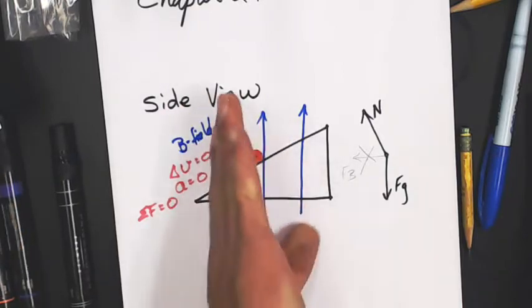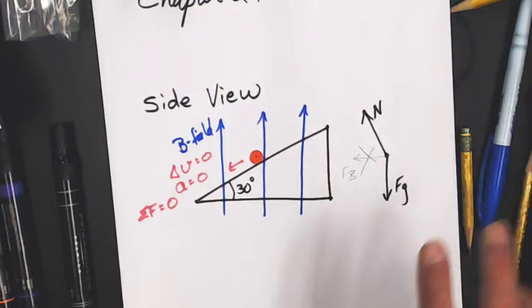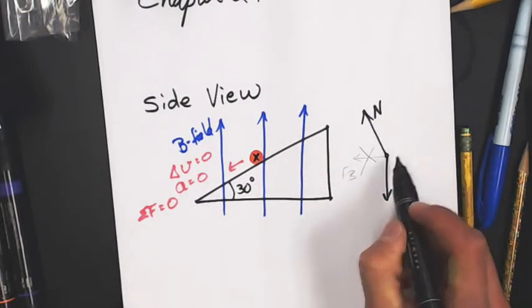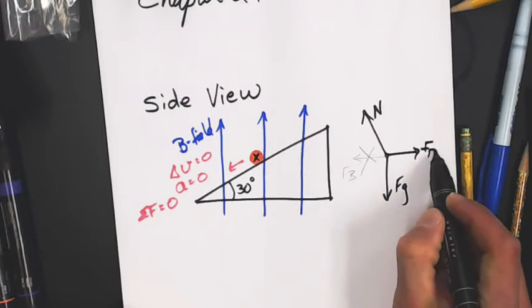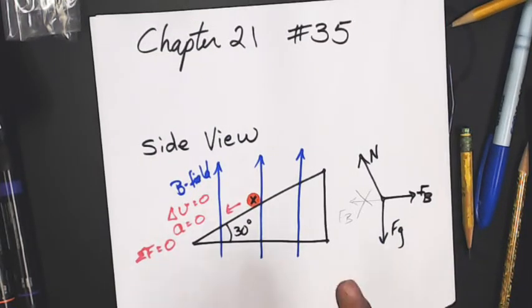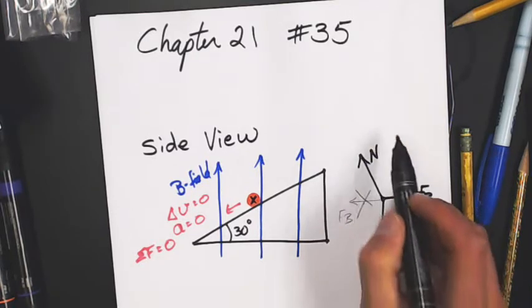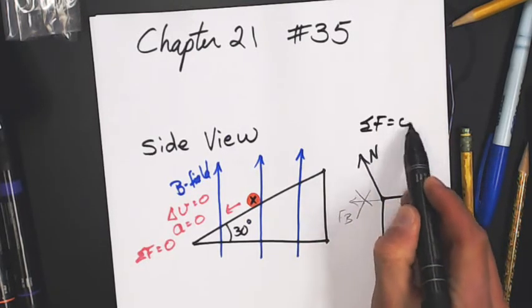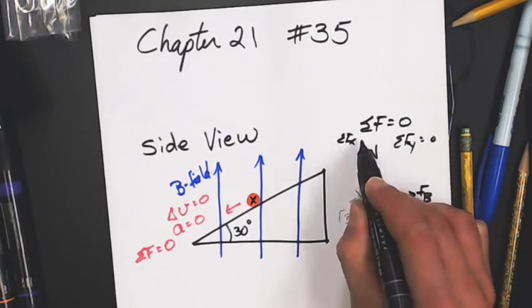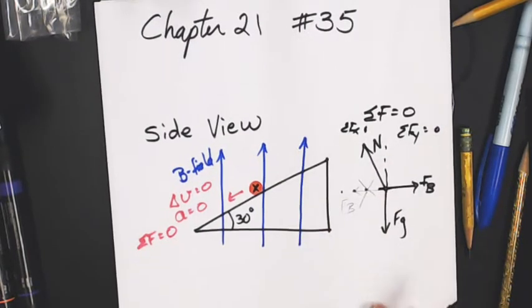That means in order to get pushed backwards, the current must be moving into the page. So actually, my current is moving this way. So that means my force through the magnetic field is pointing that direction. Now the sum of these forces have to equal zero. The sum of the forces in the x direction and the sum of the forces in the y direction have to equal zero. So now let's throw it down.